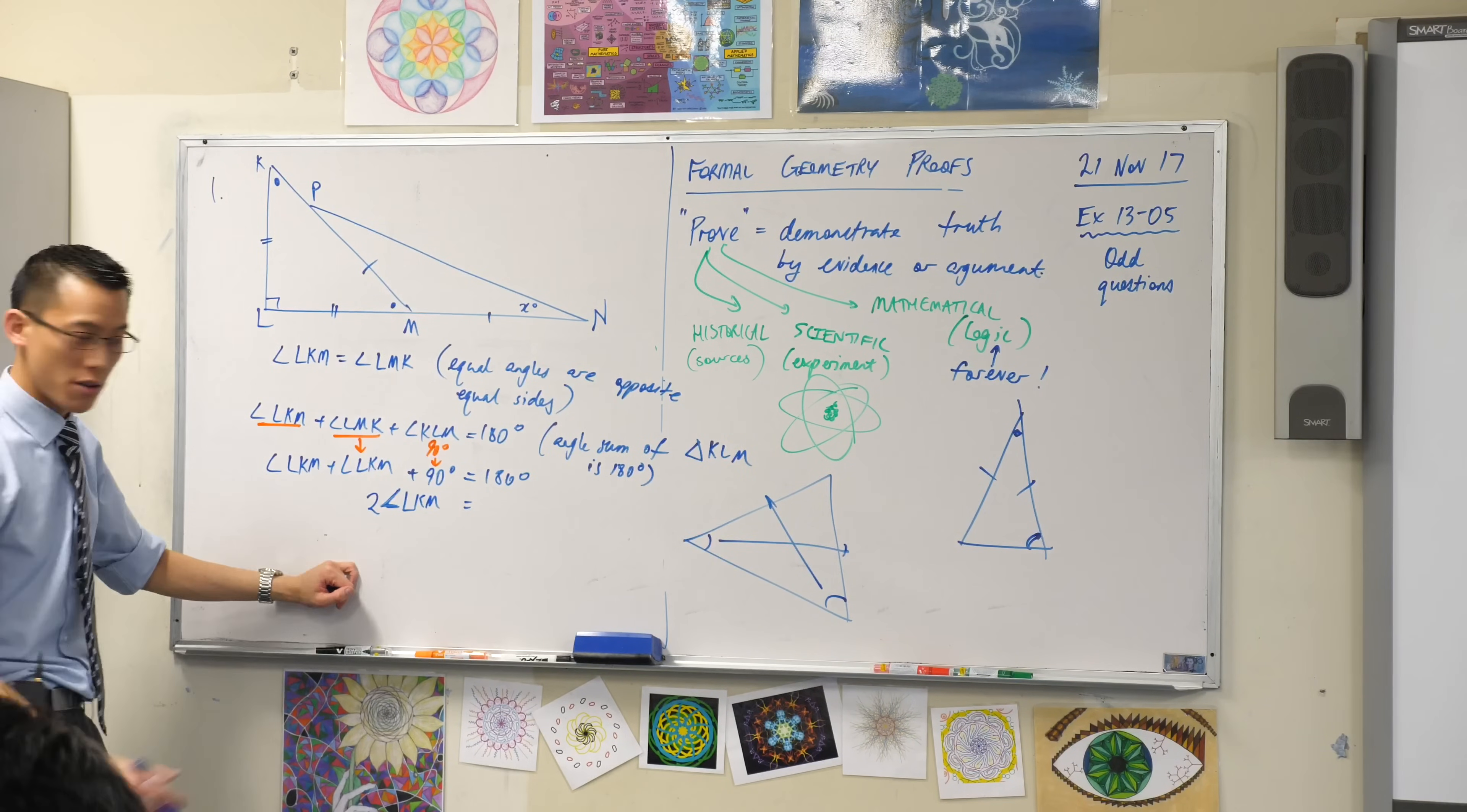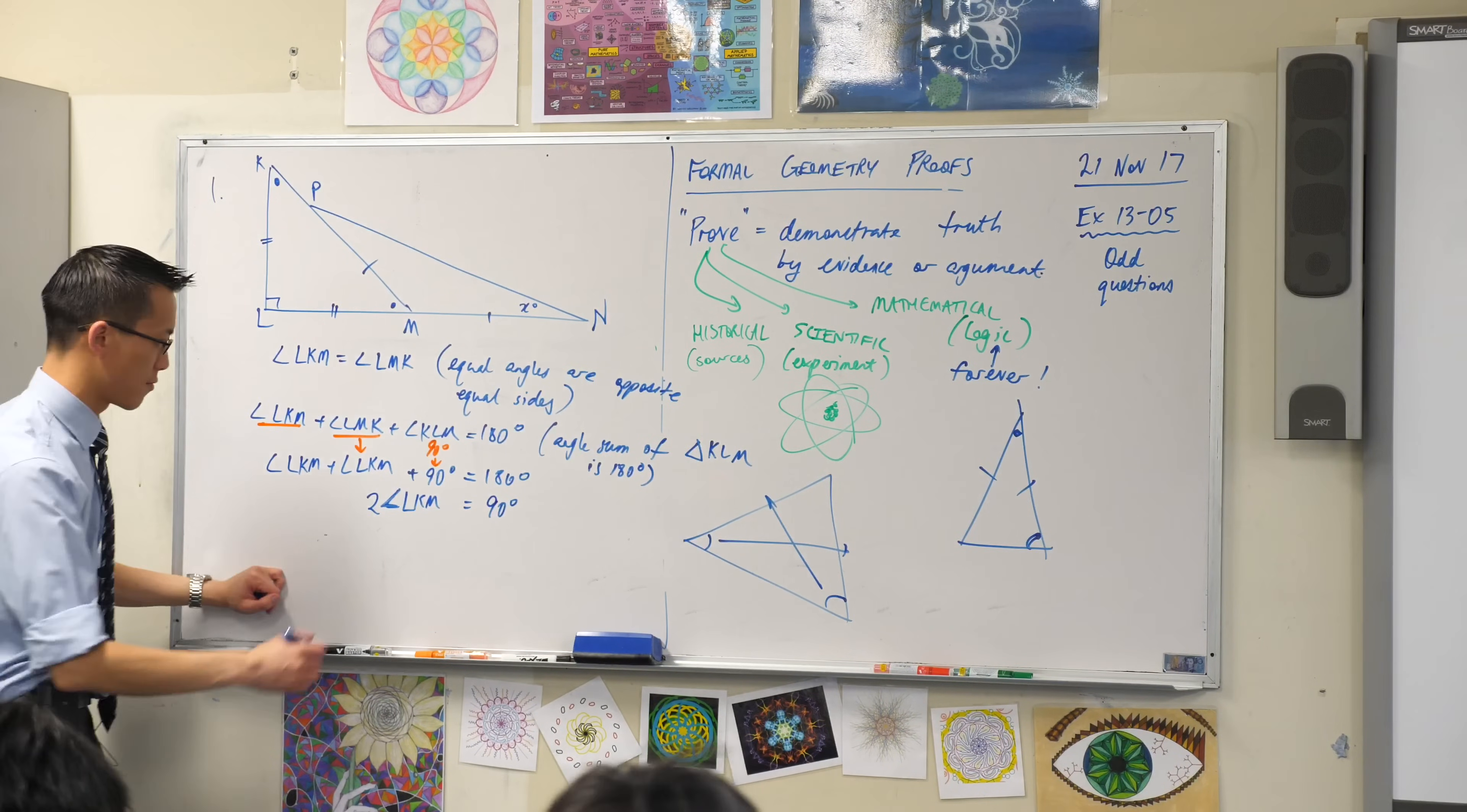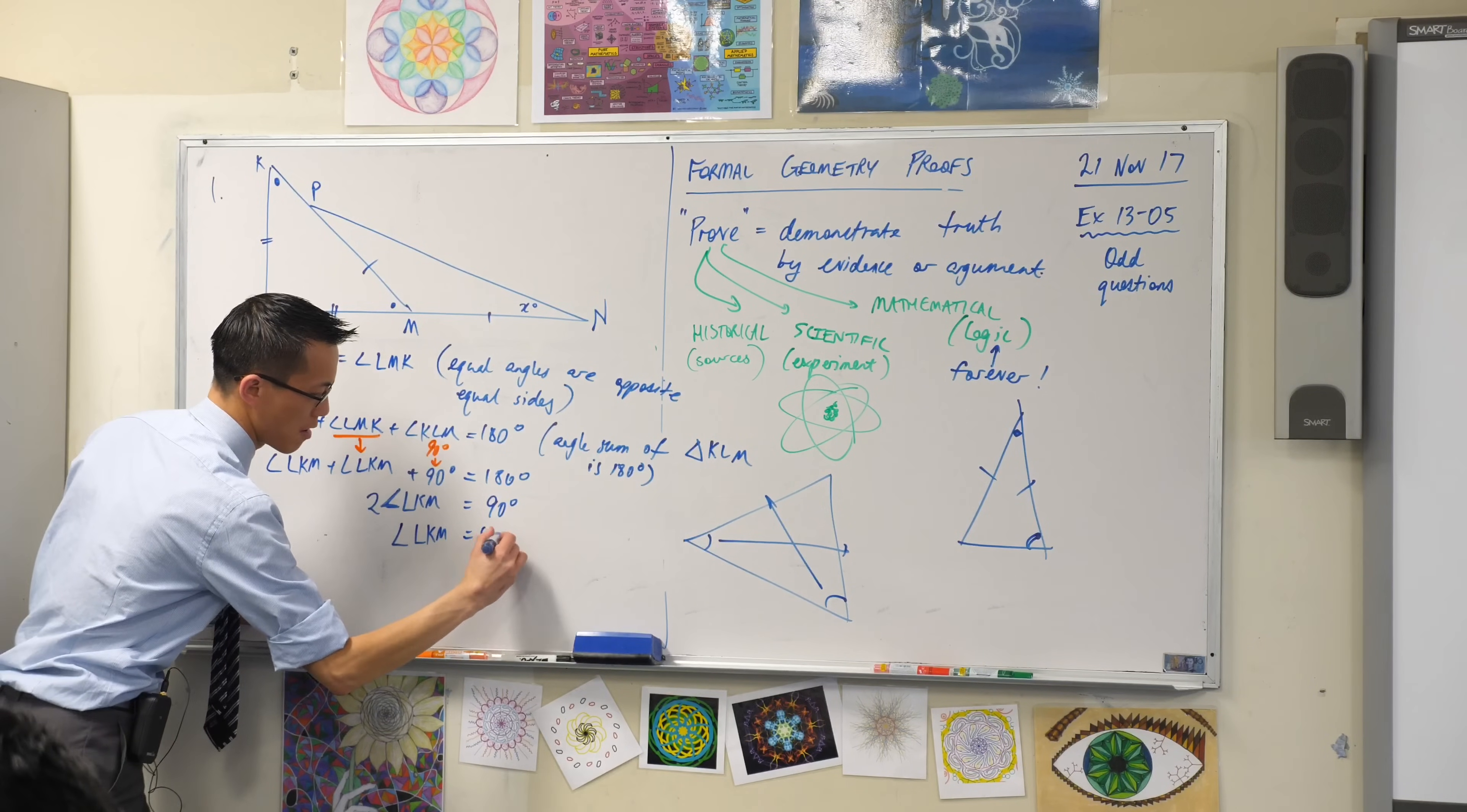If I subtract 90 degrees from both sides, I end up with 90 over here. So what's the size of LKM? I'm dividing both sides by two, which gives me 45 degrees.